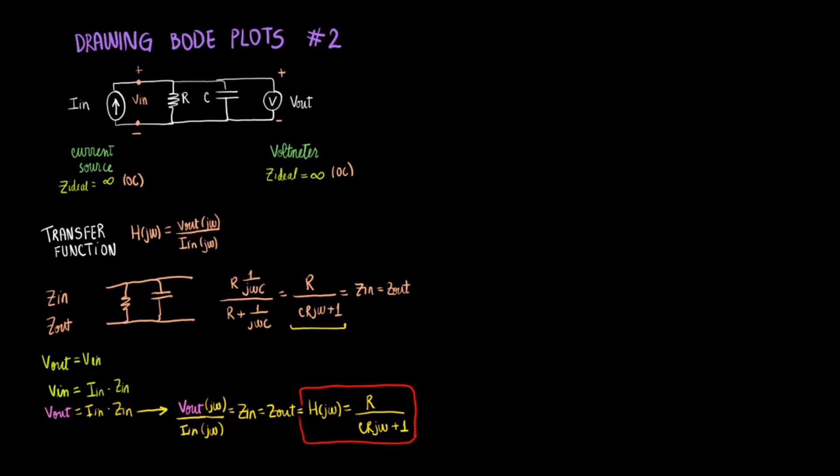But before we do that, we need to figure out the poles and the zeros from this transfer function. Notice that there will not be any zeros because we don't have a j omega in the numerator. But we can set the denominator equal to zero and get a pole.